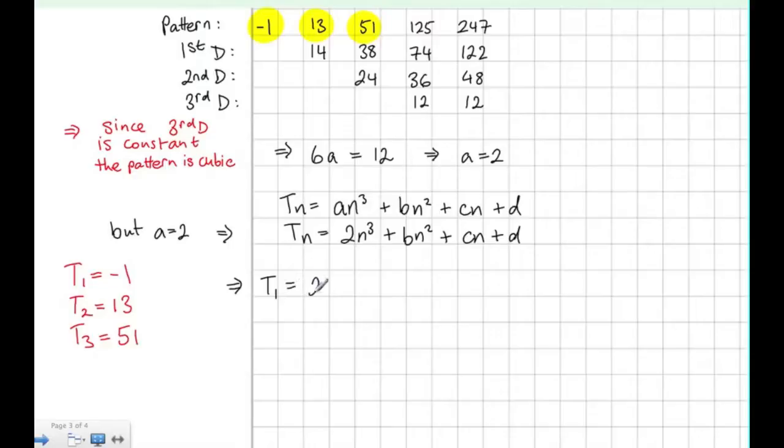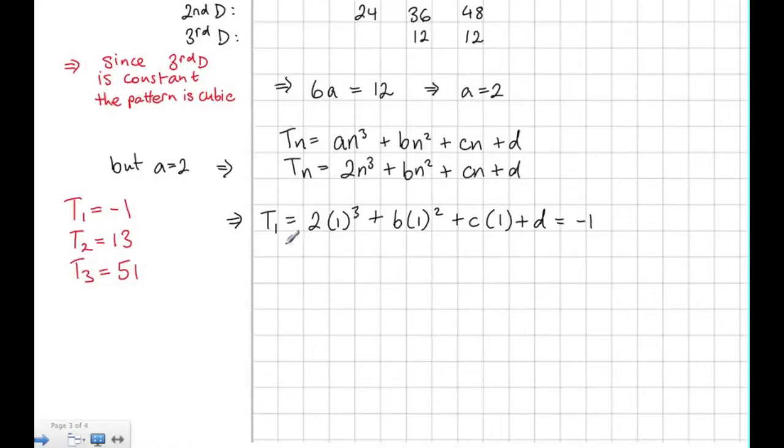So subbing in term 1, we put 1 in for n, and its value is -1. Working this out, we end up with b + c + d is equal to -3.